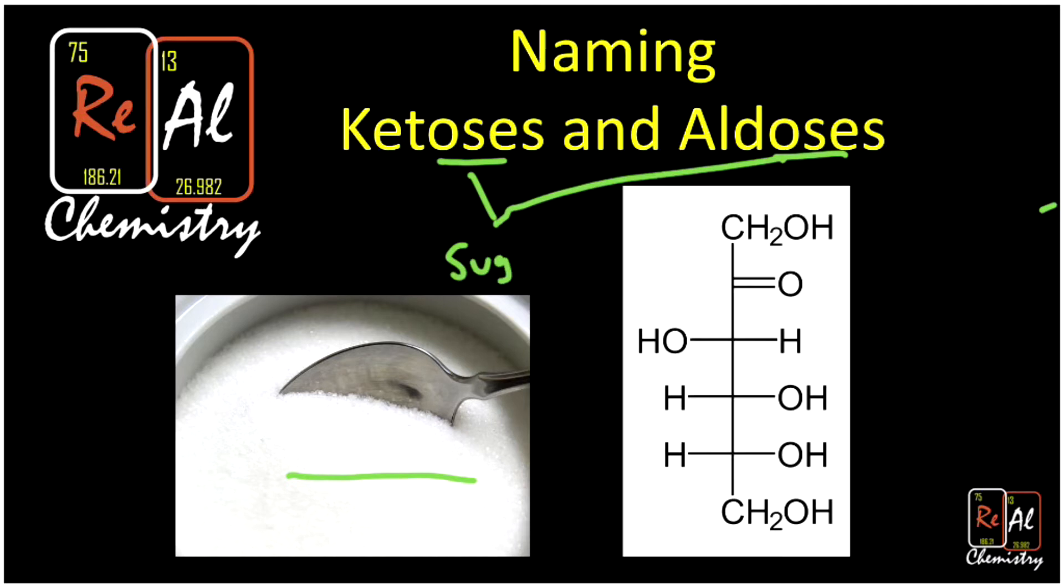And ketose and aldose are two different categories of sugar, divided by what functional groups we have present. So in this lesson, we're going to talk about a few important facts to know about sugars, particularly about ketoses and aldoses. And then we'll go into coming up with the systematic name for ketoses and aldoses.